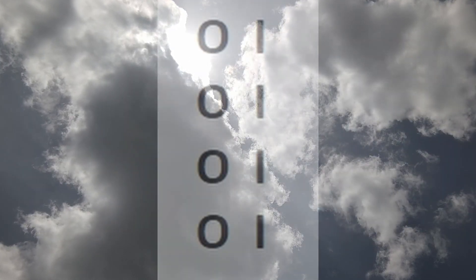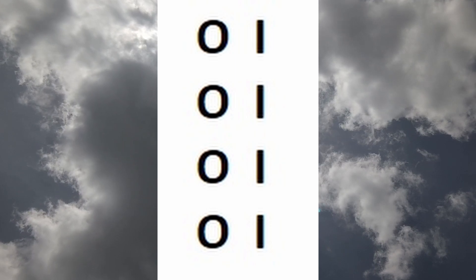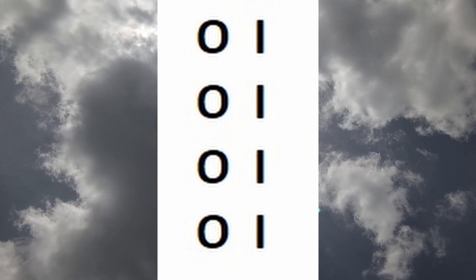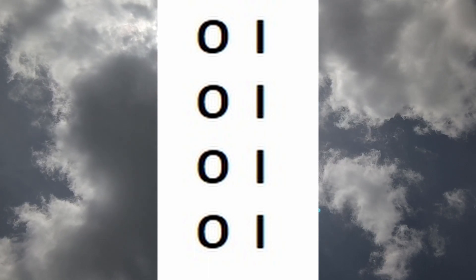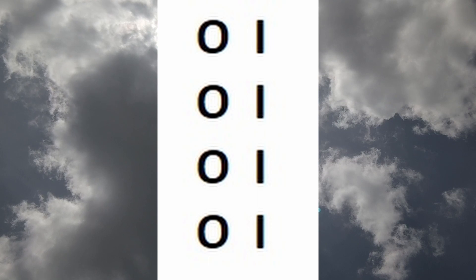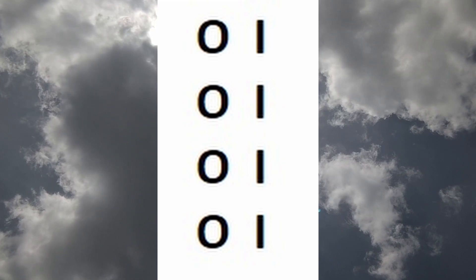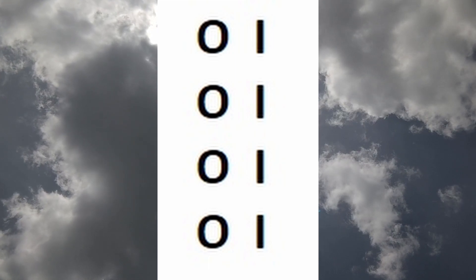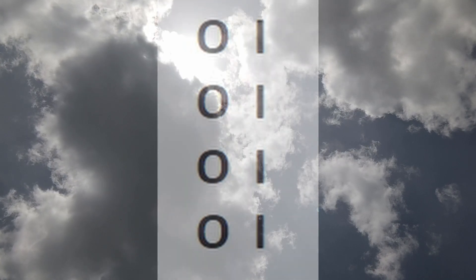The second set of symbols involves the use of zeros and ones. Similar to the vertical lines, each zero represents the dark, or a closed or off position, and the number one represents the light, or an open or on position. These symbols are grouped together into two sets of four symbols side by side. This structure symbolizes one Odu.